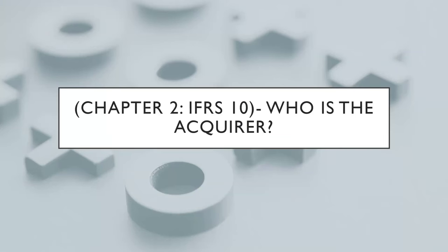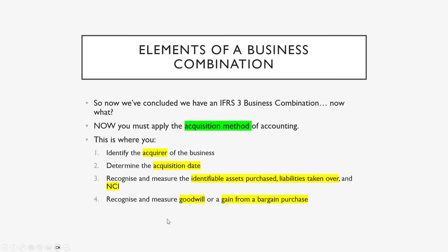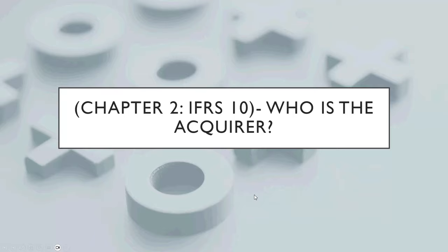Chapter 2: IFRS 10. The reason I consolidate IFRS 10 with IFRS 3 is because we need to identify who the acquirer of the business is. Then after that, we'll deal with the acquisition date, the NCI, the net identifiable assets, and goodwill or gain from bargain purchase.